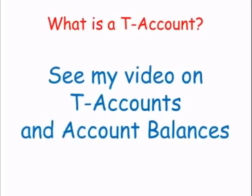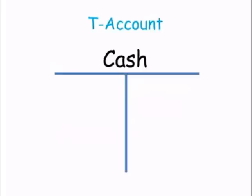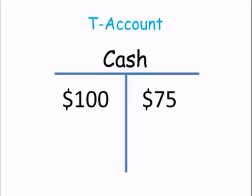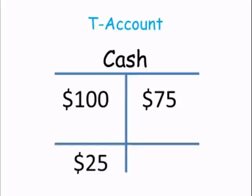If you're not sure what a T-account is, click below to watch my video on T-accounts and account balances. Let's take another cash T-account. Say a business takes in $100 of cash from a sale — we would debit cash because cash increased. And say the business paid $75 for an expense using cash — the $75 is credited to cash and put on the right. Finally, we'd like to know our balance, which in this case is a $25 debit balance, and the $25 goes on the left.